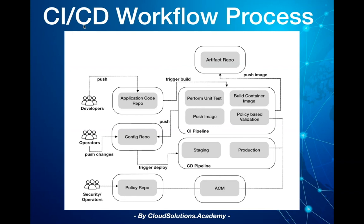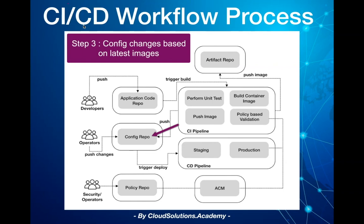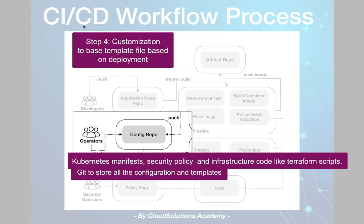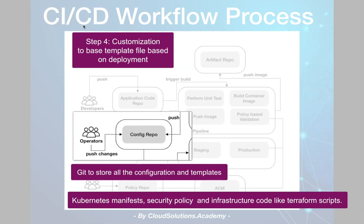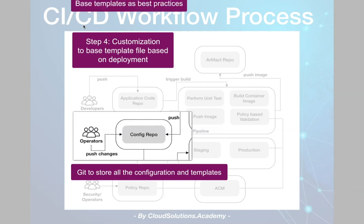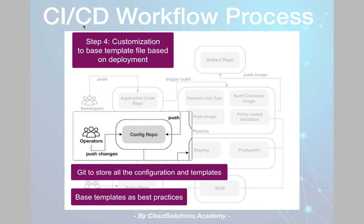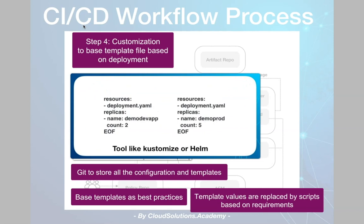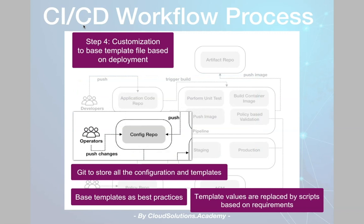Once the container image is pushed to the container registry, the deployment configuration files need to be updated with the container image URL that was pushed in the earlier step. The operator team also uses the Git repository to store all the configurations like Kubernetes manifests, security policy files, and infrastructure code like Terraform scripts, and usually creates templates that provide best practices to be applied for deployment across environments. These template files provide placeholders for injecting property values at runtime — like replicas equal to 2 for development and replicas equal to 5 for a production instance. Various tools such as Kustomize or Helm can be used to create templates for your manifests without changing the original base manifest file, and all templates and tools need to be integrated as part of your CI/CD process.